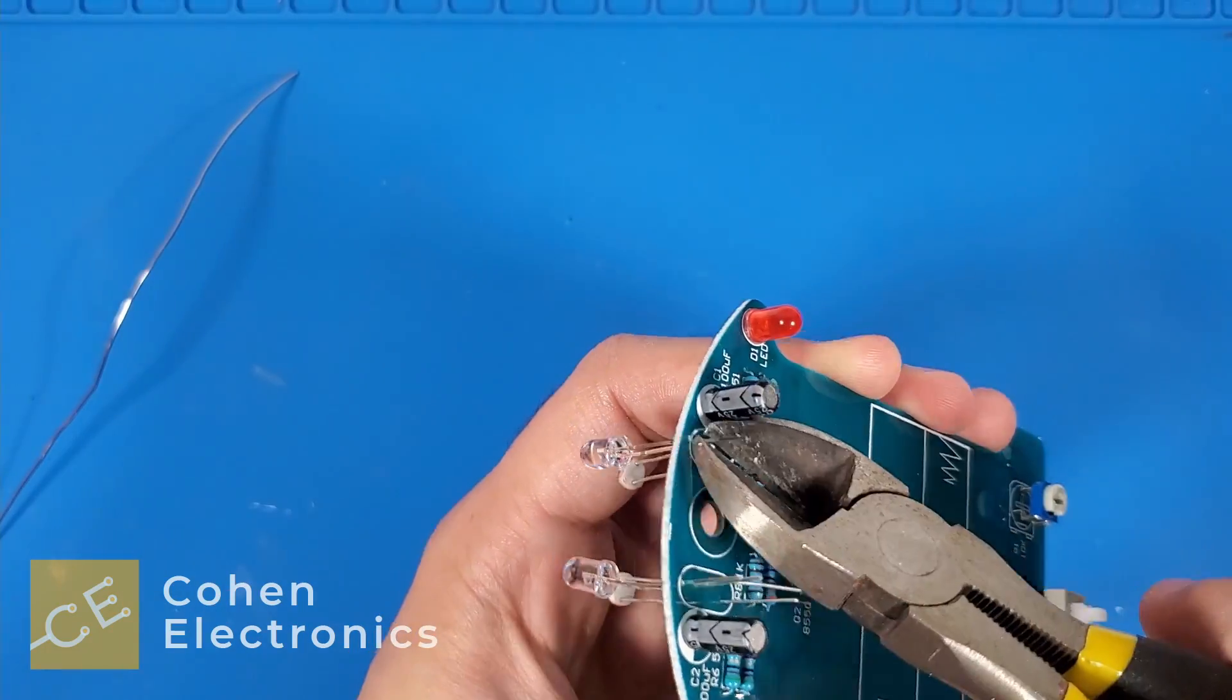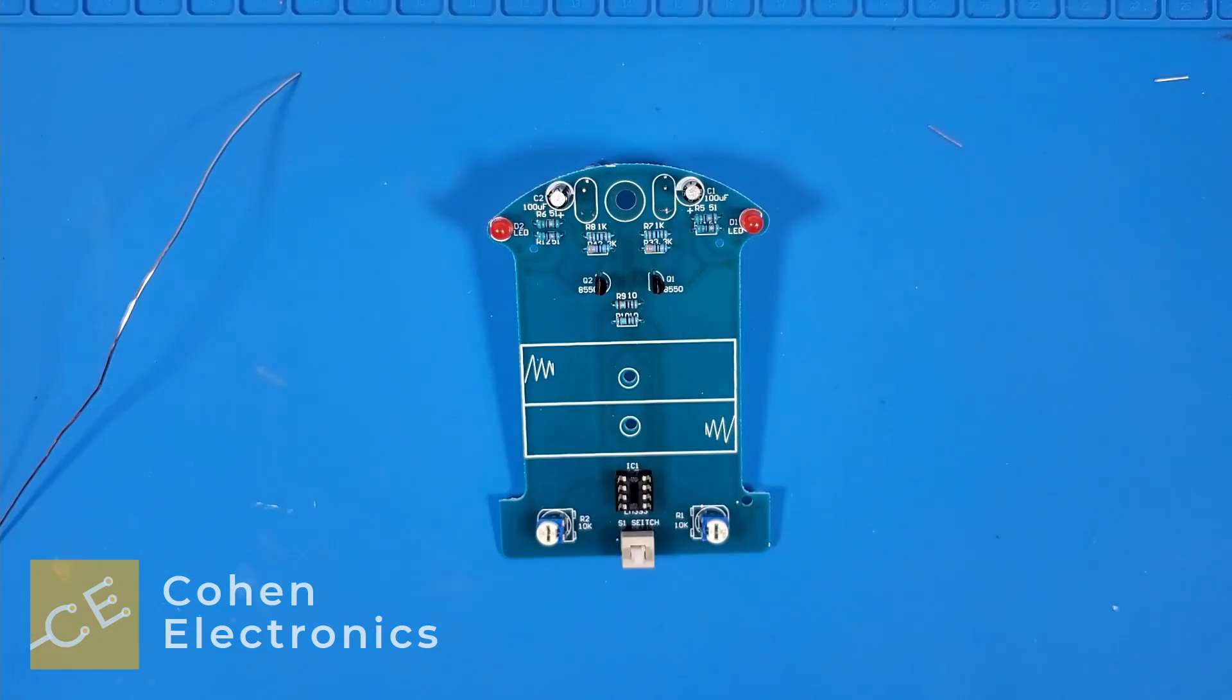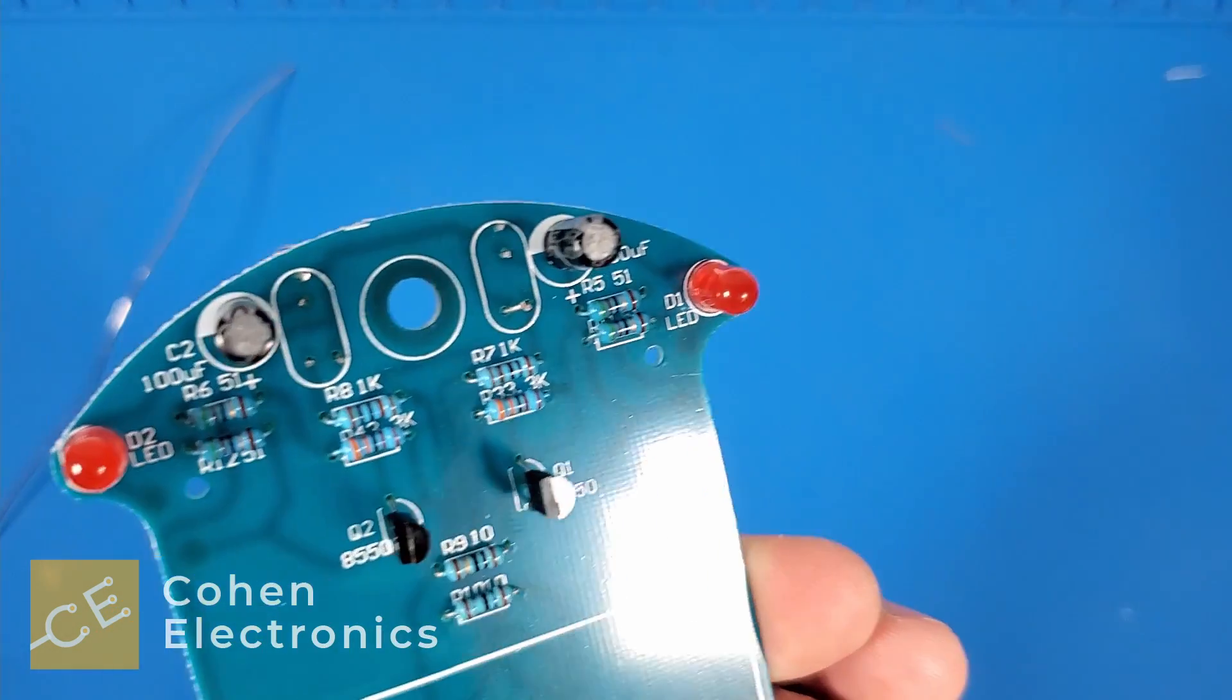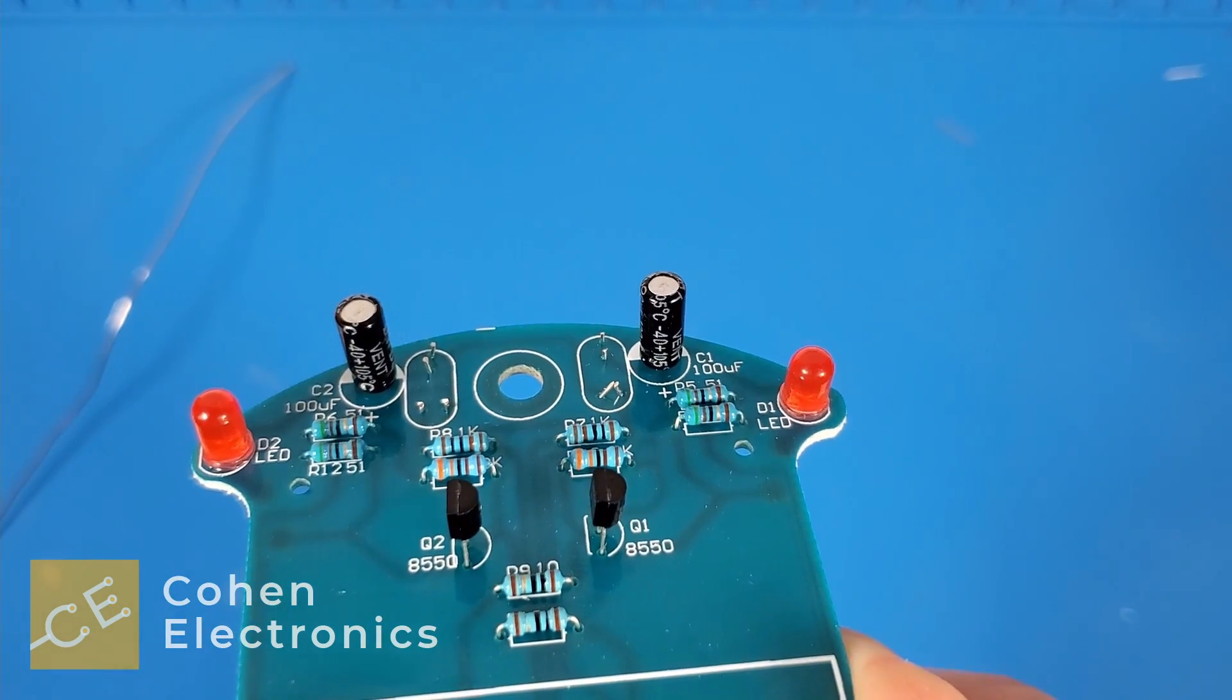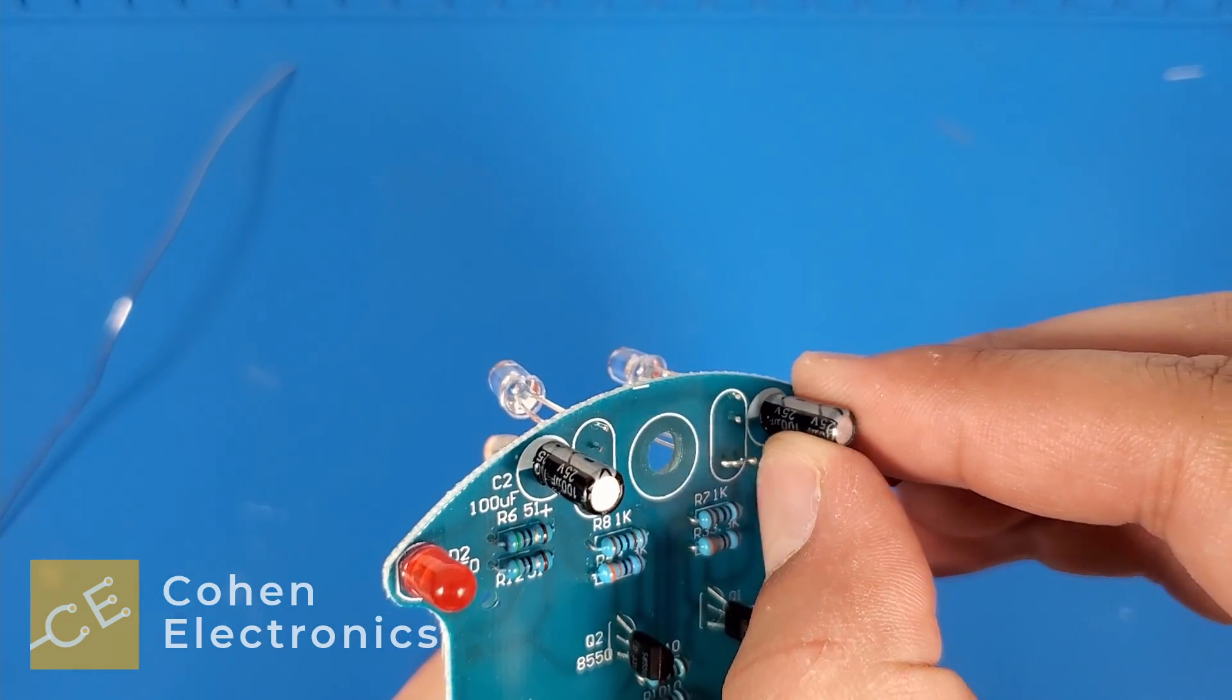Flip the robot body over and use a wire cutter to cut the excess legs of the photoresistors and clear LEDs. If you ever cut the legs off a component in such a way where they are making contact, bend them away from each other so they are not touching.